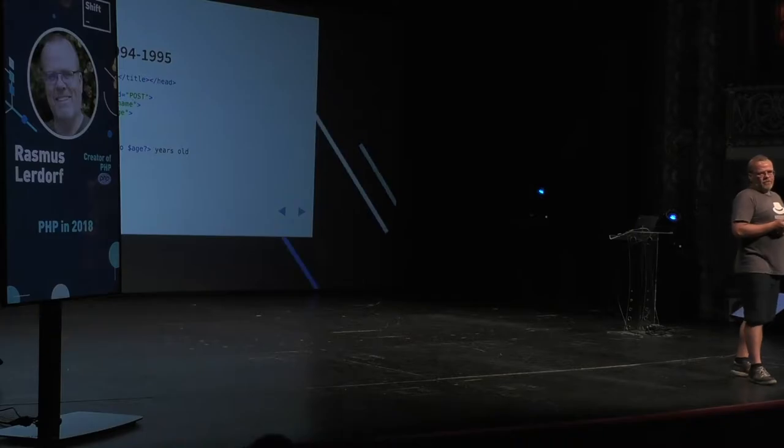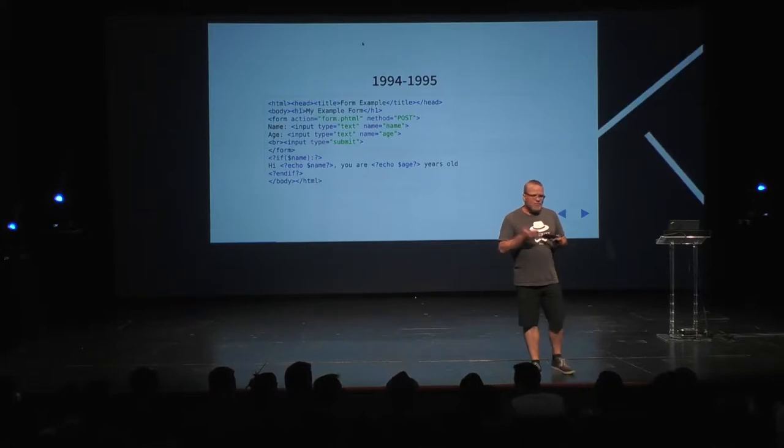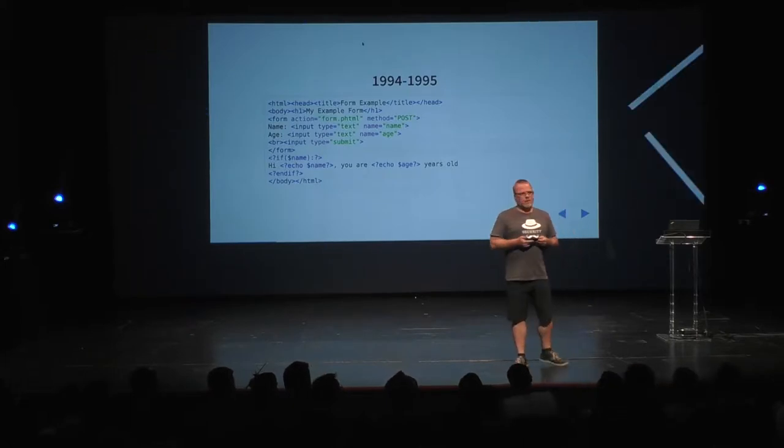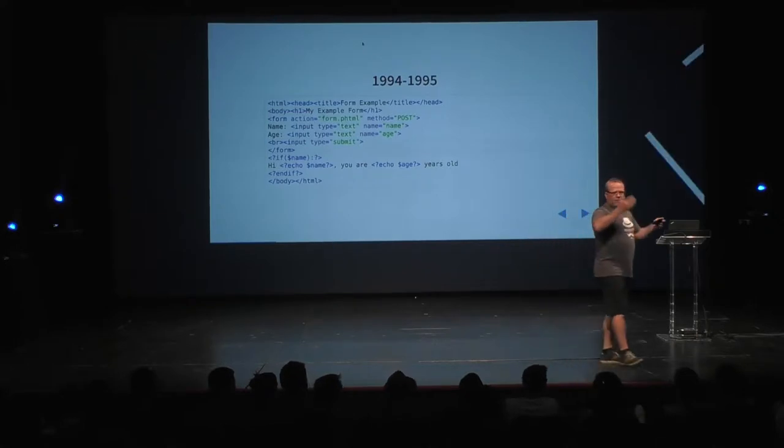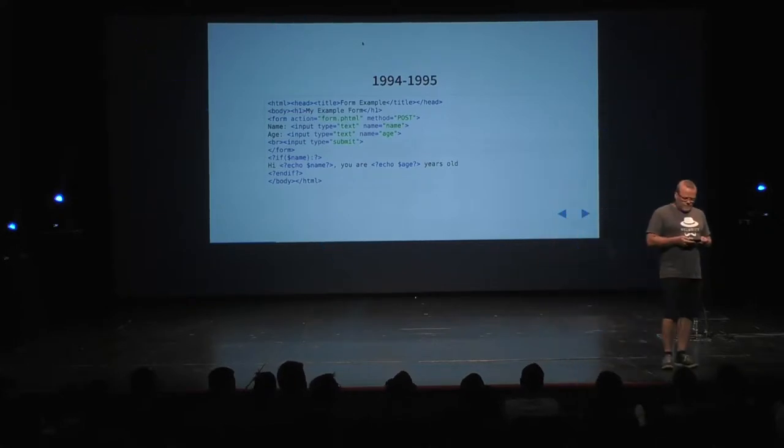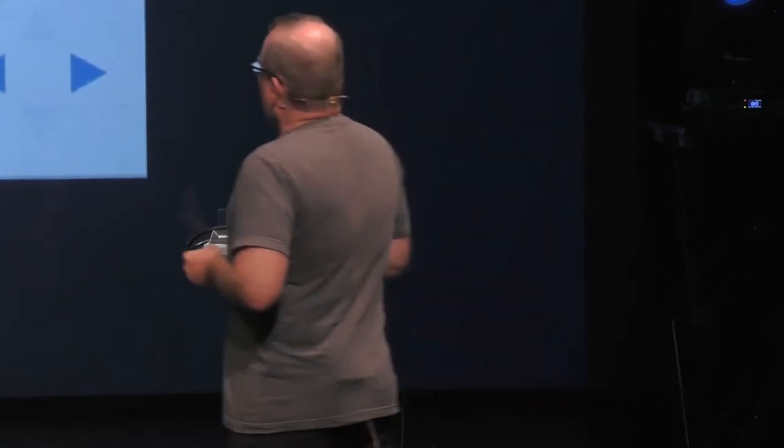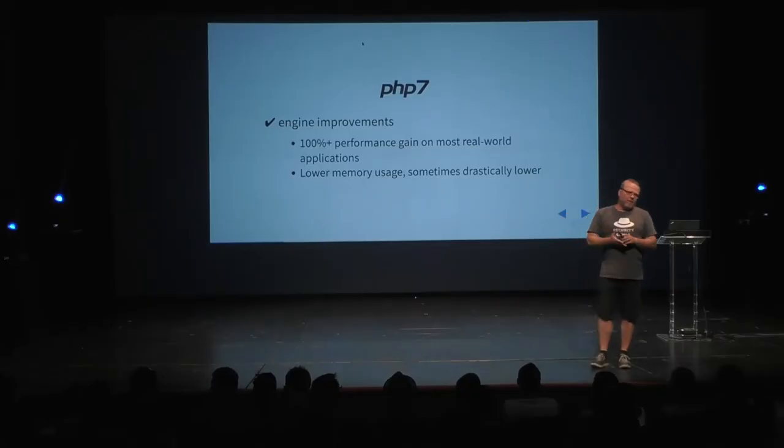And then some idiot wrote a templating system for my templating system. You may have heard of Smarty. I was like, oh man. That's when I knew I had completely failed — once you start templating the templating system, it's all lost. But that's kind of where PHP came from: this constant battle trying to convince people to write stuff in C, and failing at every step. So I gave up and said, okay, fine — let's just make the templating language better.